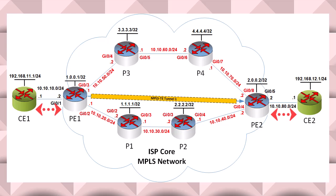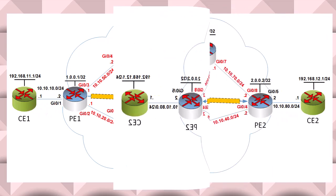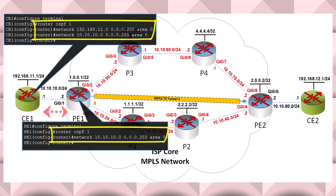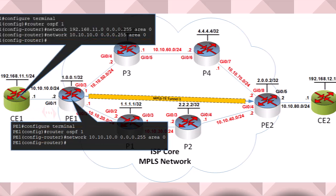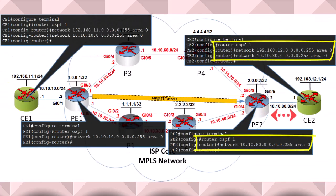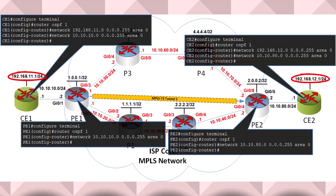For the CE1 and PE1 routers we have the following OSPF configurations. These are normal OSPF configurations that create a simple OSPF adjacency between these two routers. Similarly for CE2 and PE2 we have these configurations. So now the customer networks are known to the PE1 and PE2 routers via OSPF.